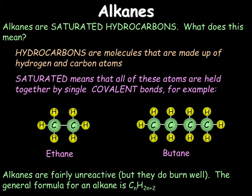First of all, we will look at the alkanes. The alkanes are saturated hydrocarbons. Hydrocarbons, as we just looked at, are molecules that are made up of only hydrogen and carbon. Saturated means that all of these atoms are held together by single covalent bonds. For example, ethane or butane: ethane is C2H6, butane is C4H10.